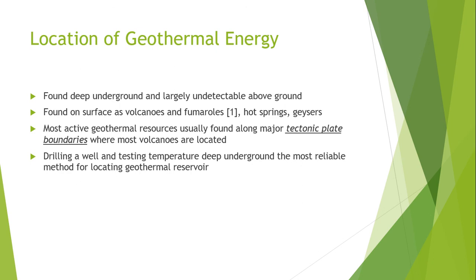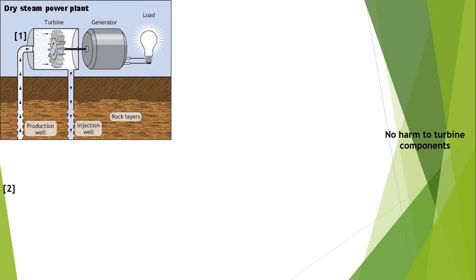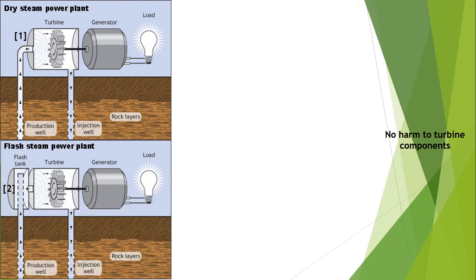The most reliable method of locating a geothermal reservoir is by drilling a hole or a well and testing the temperature. The first type of geothermal power plant is the dry steam power plant, where steam travels directly to a turbine which drives a generator to produce electricity.